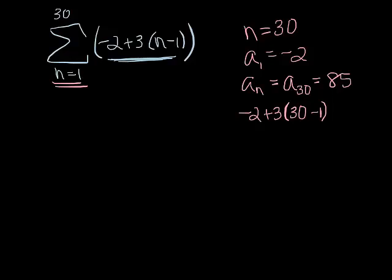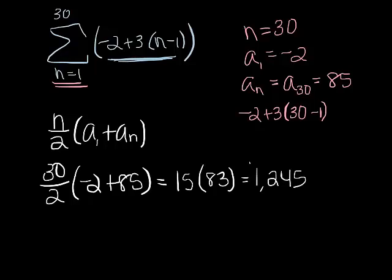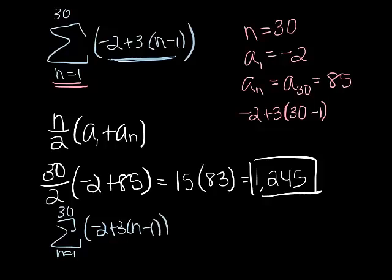Now I'm ready to plug all of these things into my formula. n was 30, a sub 1 was negative 2, a sub n was 85. Hopefully you agree that 30 over 2 is 15 and that 85 plus negative 2 is 83. So my sum is going to be 15 times 83 which gives me 1245. The evaluation of this sum is 1245.